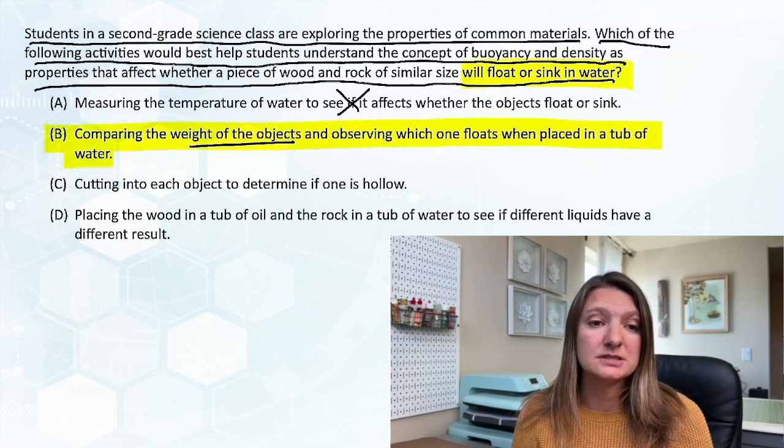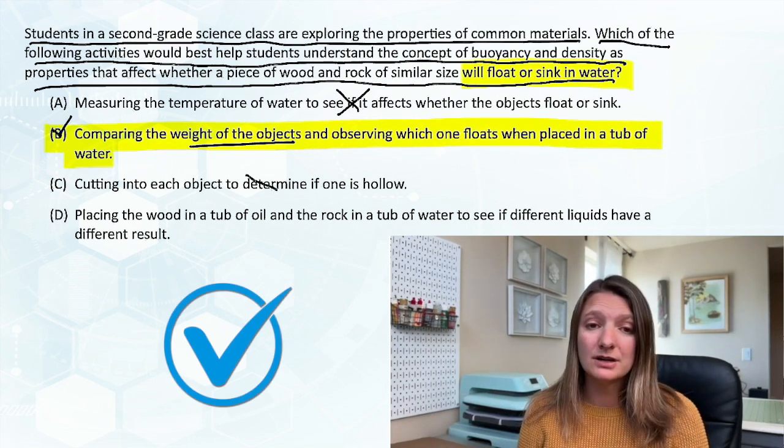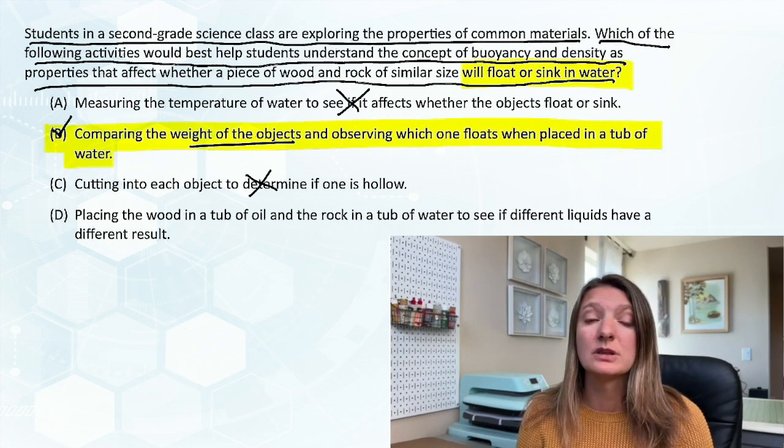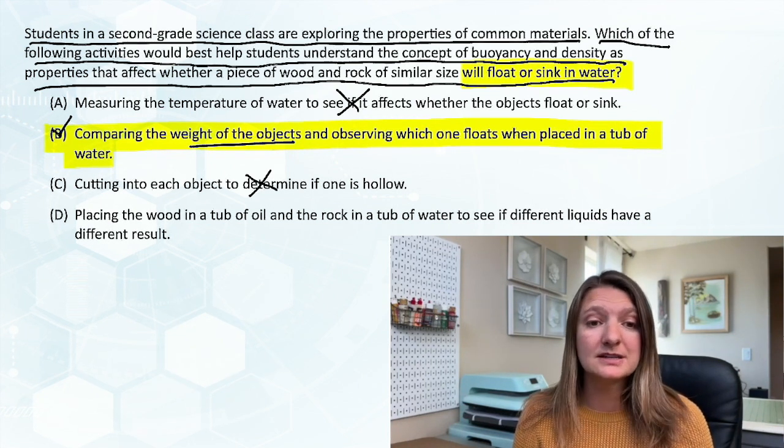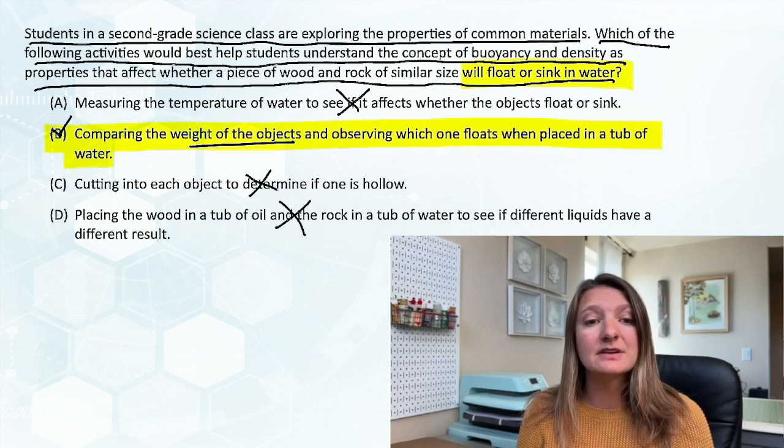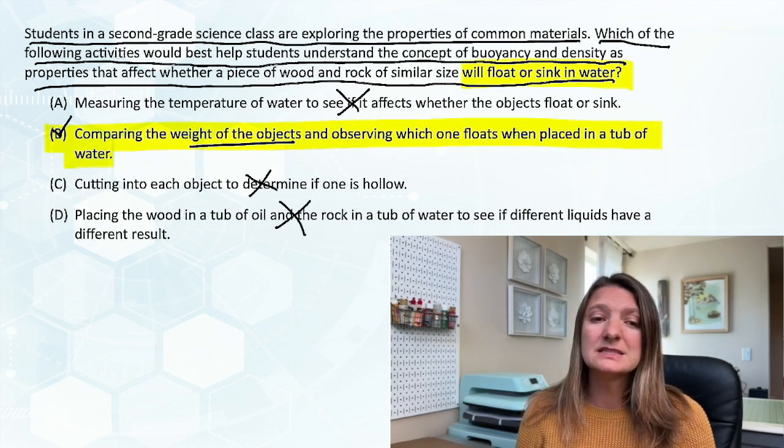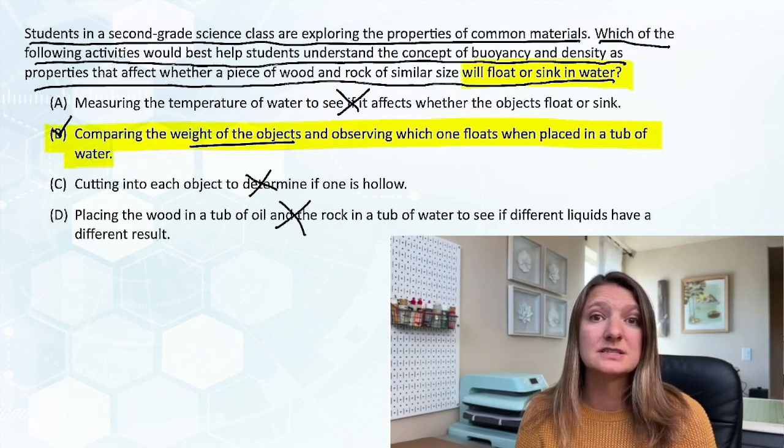But let's look at the other options. C, cutting into an object to determine if one is hollow. That is a little bit with density but not really with buoyancy. D, placing the wood in a tub of oil and the rock in a tub of water to see if different liquids have a different result. That's different buoyancies, so that would be different results. So our answer is still B.